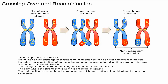As you go through meiosis, you're going to give one chromatid — essentially one half of the X — into each gamete. So you end up with four gametes: one with capital A and capital B, one with capital A and lowercase b, one with lowercase a and capital B, and one with lowercase a and lowercase b.